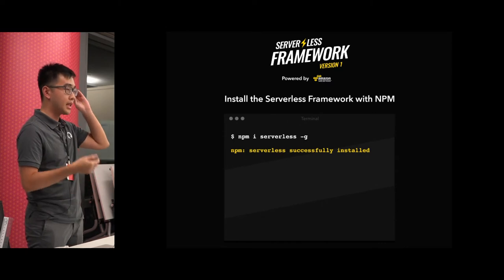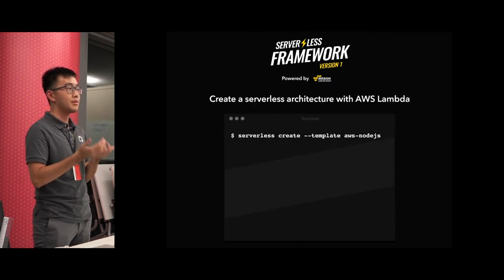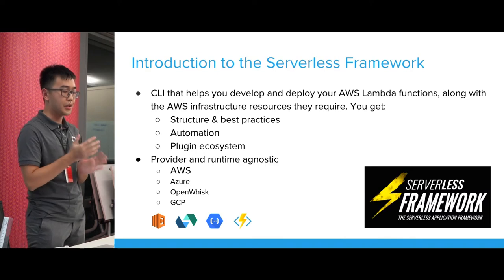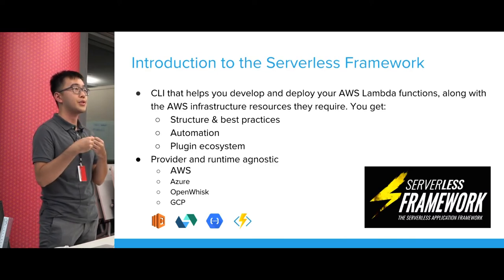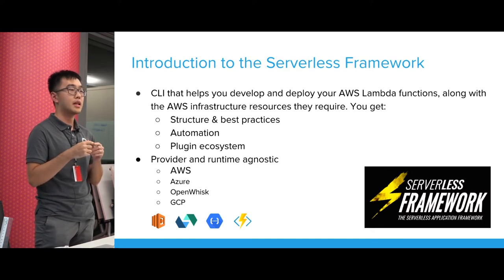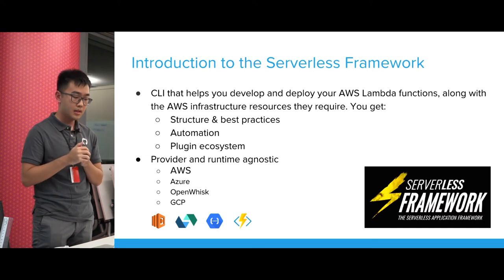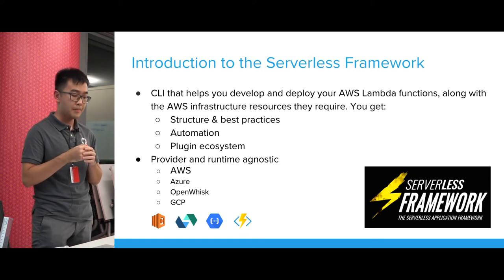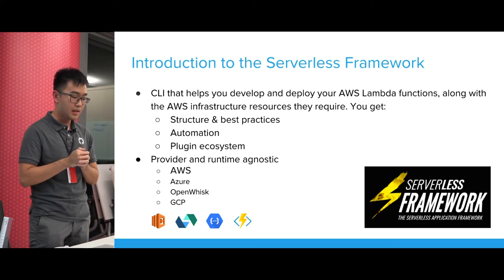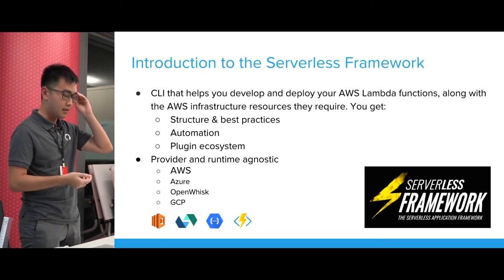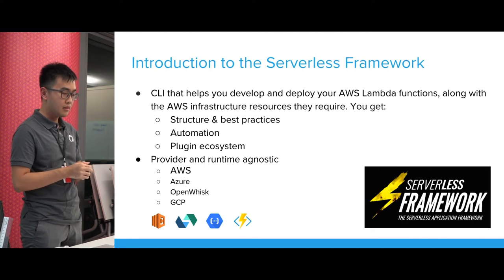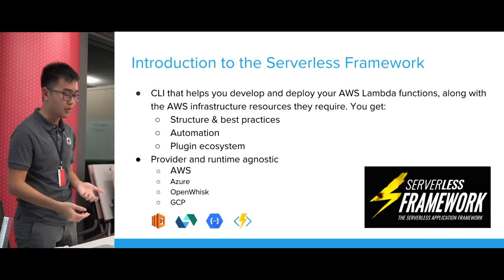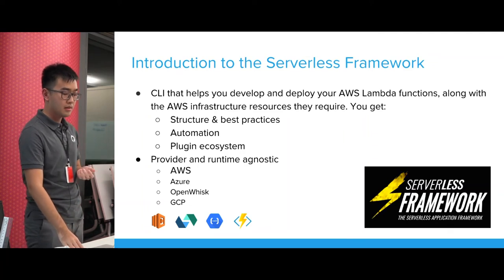Next we look at the serverless framework, which is a CLI that helps you build serverless applications. Out of the box, you get structure and best practices — you have this idea of a service, which is a group of related functions. You get automation to deploy your applications, and a plugin ecosystem where you can extend the framework's behavior. It has an active open source community and is also provider-agnostic, meaning it has a common API for interacting with different serverless platforms like AWS and others.